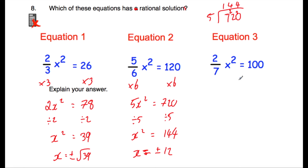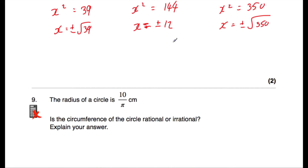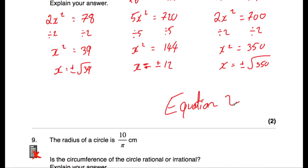Let's check equation three: two sevenths x squared equals 100. Multiplying both sides by seven gives two x squared equals 700. Dividing by two, x squared equals 350. So x equals plus or minus the square root of 350. Since 350 is not a square number, that's irrational. So equation one and equation three have irrational solutions; equation two has rational solutions. Our answer is equation two.